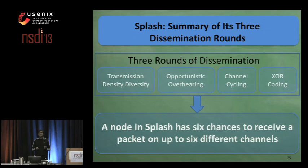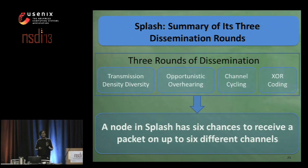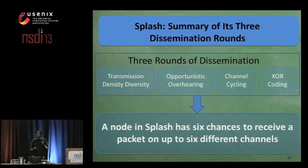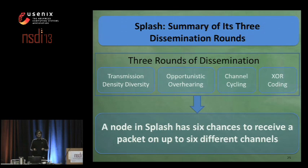More importantly, each chance occurs on a different channel. So if the quality of one or two channels is bad, the packet is still decoded on one of the remaining channels. This is a key advantage of multichannel systems over their single-channel counterparts.